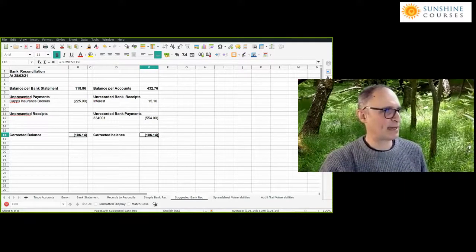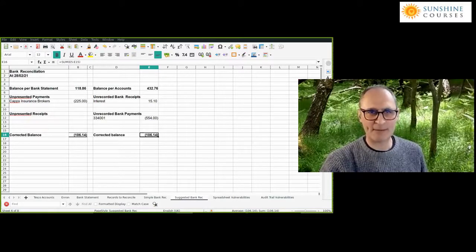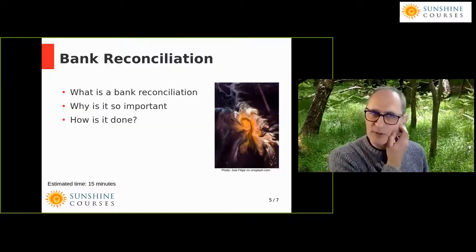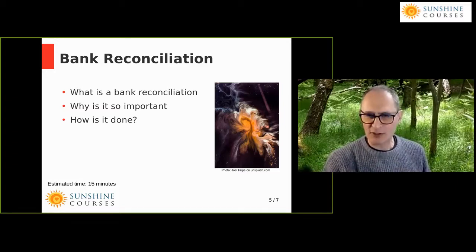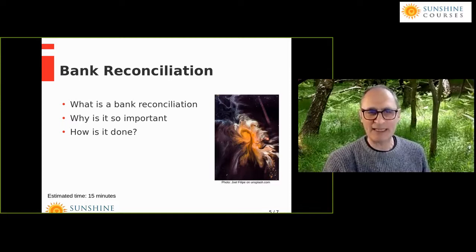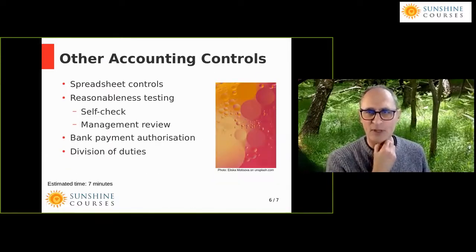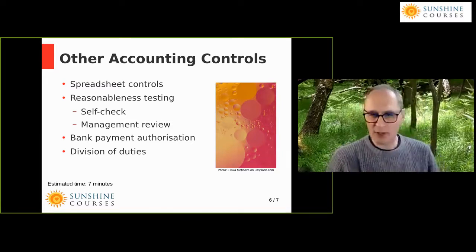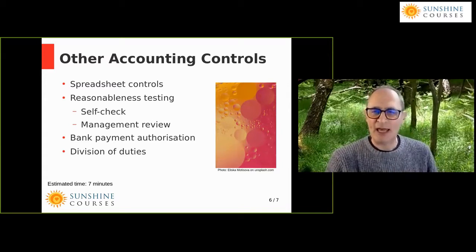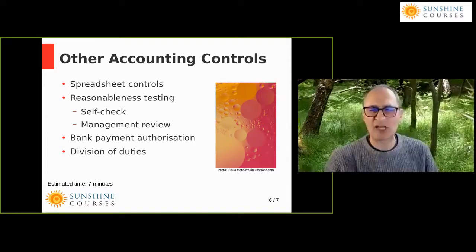Switching back to the presentation — we've covered the bank reconciliation: what it is, why it's important, and how to do it. Now let's look at other accounting controls. The bank reconciliation is the most important of all controls, but there are others. I'm going to run through them quickly because we don't have enough time to go through them in detail, though as we go through the rest of the course we will touch on these in more detail.